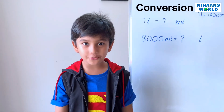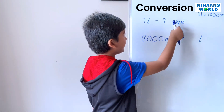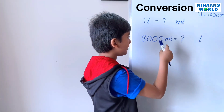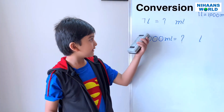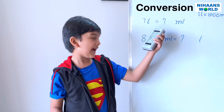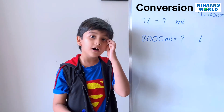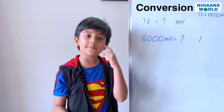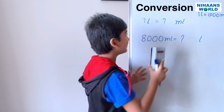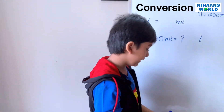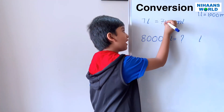Friends, let's do conversion — liters to milliliters and milliliters to liters. So, seven liters is equal to how many milliliters? Can you tell me? You are right — it is seven thousand.